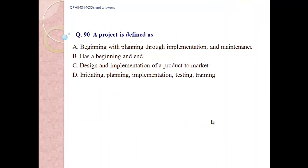Question number 90: A project is defined as: A. Beginning with planning through implementation and maintenance, B. Has a beginning and end, C. Design and implementation of a product to market, D. Initiating, planning, implementation, testing, training. Answer B: Has a beginning and end.